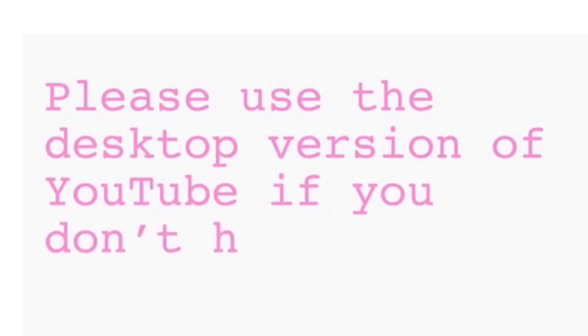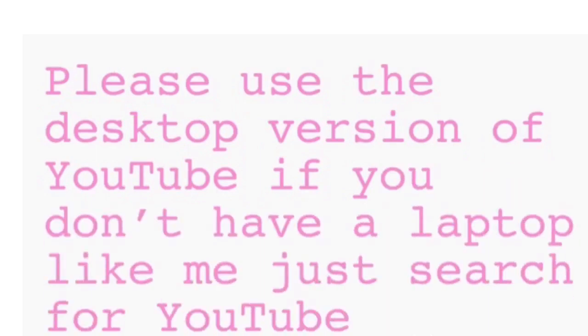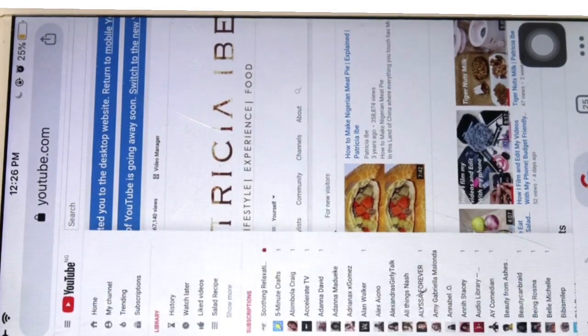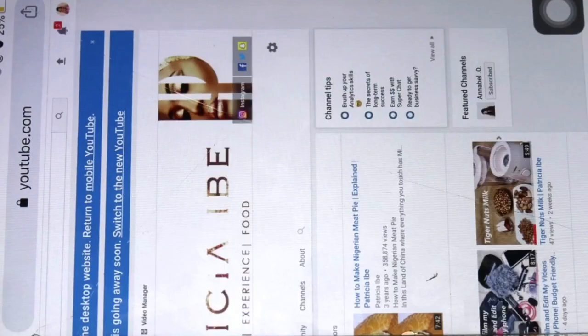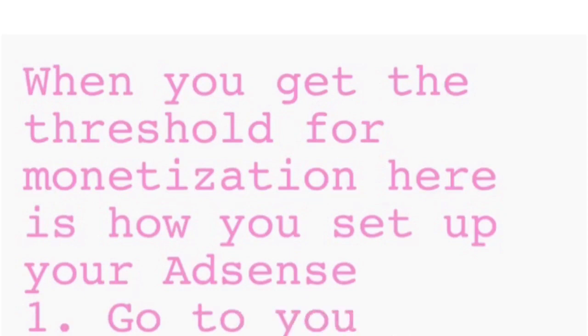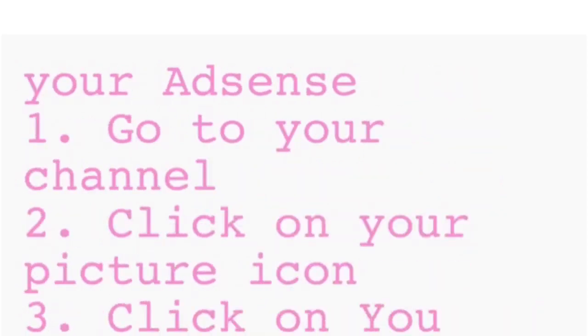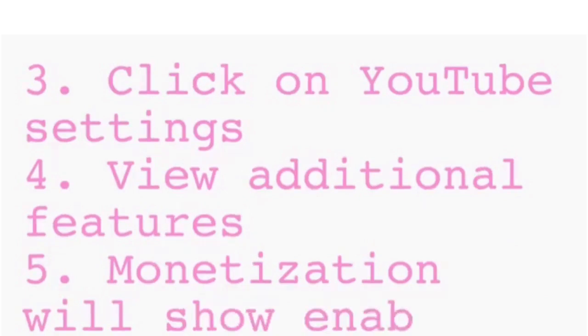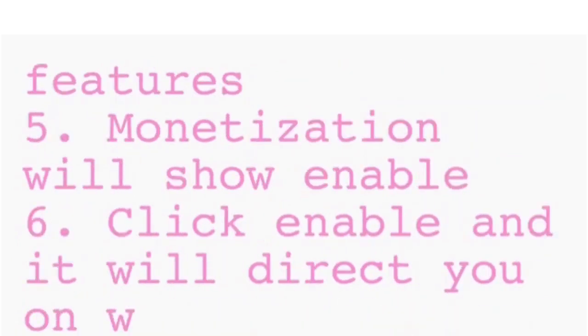How do I set up my AdSense when I finally reach the threshold for monetization? Please use the desktop version of YouTube. If you don't have a laptop, search for the YouTube desktop version on Chrome or Safari and log in. I'll leave a screen recording showing you what to do. When you reach the threshold, here are the steps: go to your channel, click the picture icon, click YouTube settings, then view additional features — monetization will now show 'Enable' — click Enable and it will direct you on what to do.